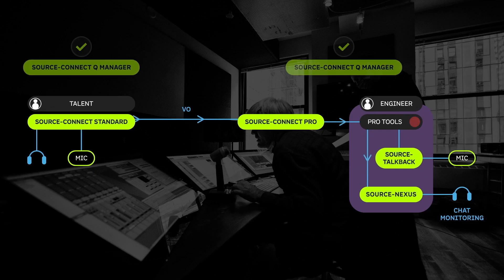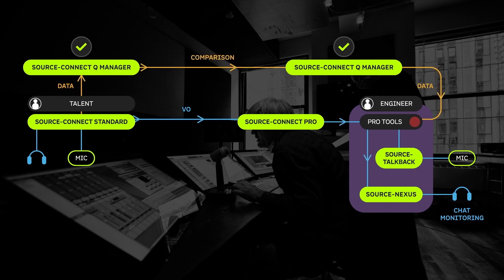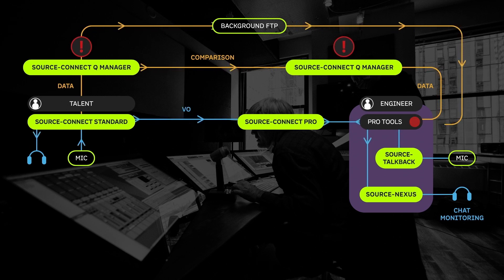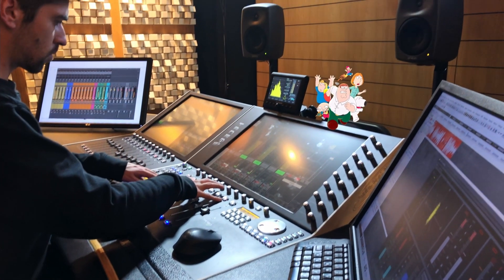Each end has the Source Connect Q Manager. The talent's Q Manager checks the sent audio and the studio's Q Manager confirms that the engineer is receiving all of this information by comparing the data with its recorded audio files folder. If any of the recorded packets are missing, it alerts the talent's Q Manager, which sends the missing audio data to the engineer's audio files folder via an FTP server, without the engineer having to do anything whatsoever. Total peace of mind from the Q Manager — your digital best buddy that's always watching your back.